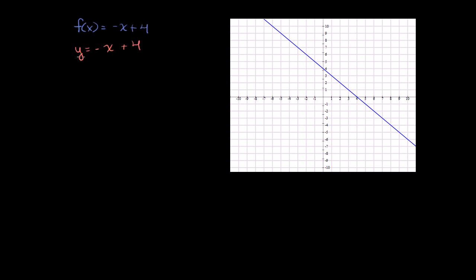Right now we've solved for y in terms of x. To solve for the inverse, we do the opposite — we solve for x in terms of y. So let's subtract 4 from both sides. You get y minus 4 is equal to negative x. And then to solve for x, we can multiply both sides of this equation by negative 1. So you get negative y plus 4 is equal to x.